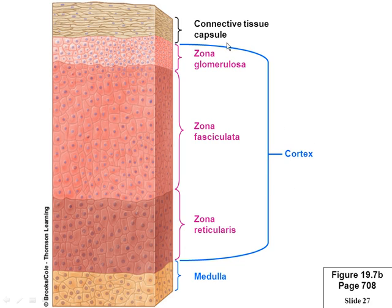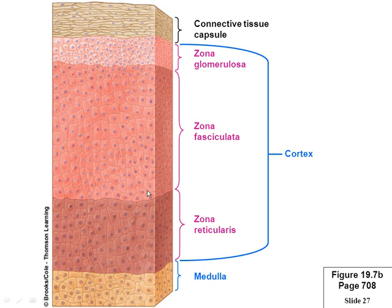All hormones from all three cortex layers are made from the same starting material — cholesterol. They're all steroids. The only difference between the three layers is the enzyme: one enzyme makes aldosterone, another makes DHEA, and the third makes cortisol. So all these hormones are made from cholesterol, and they're all steroids.